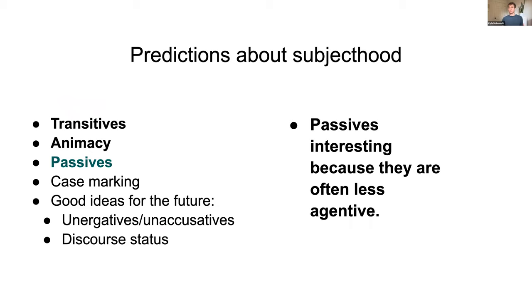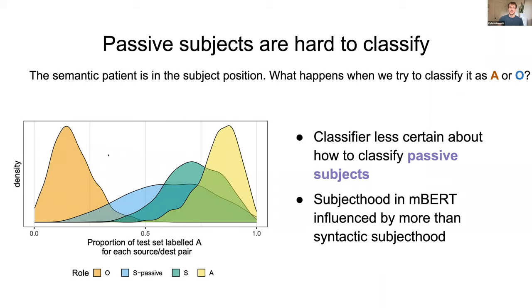Passives are interesting because passive subjects are typically less agentive — just as inanimate nouns are typically less agentive. Again, that's what we see: a gradient classification where O's are classified less as subjects, A's are most subject-like, S falls somewhere between, and then passives show a widespread distribution. Passive subjects are particularly hard for the model to classify.